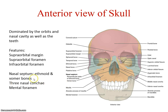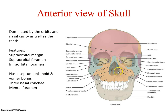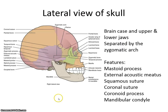There are three nasal conchae — you can see two of them here; the third superior one is up higher. The superior and medial conchae are actually part of the ethmoid bone. The inferior one — the lowest you see there — is actually its own bone. And then there's a mental foramen, because the chin is the mental region.